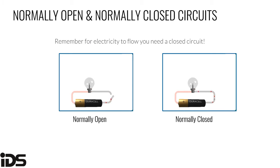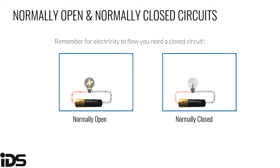Normally open and normally closed describes the resting state of a switch in a circuit. If a switch is normally open, it will change state to closed when triggered. If a switch is normally closed, it will change state to open when triggered. For electricity to flow, you need a closed circuit. A normally open switch means electricity won't flow until it changes to closed. A normally closed circuit means electricity always flows until you change the state to open.